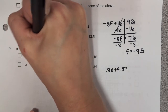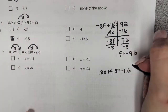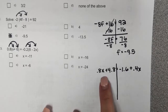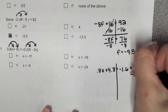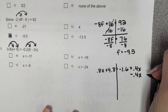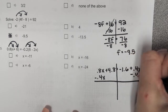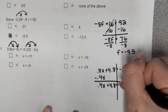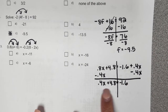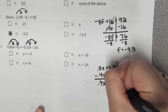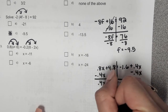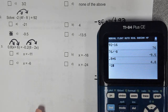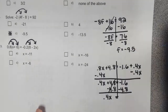Then I'm going to distribute this negative 0.2, so we get negative 1.6. Negative times a negative is a positive 0.4x. After distributing, you can't have x's on both sides. So to get rid of the 0.4x, you subtract 0.4x from both sides. So we get 0.4x plus 4.8 equals negative 1.6. Our goal is to get x by itself, so to get rid of 4.8, you subtract 4.8 from both sides. Those eliminate, and negative 1.6 minus 4.8 is negative 6.4.